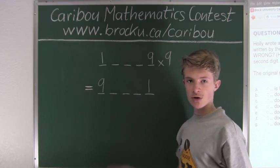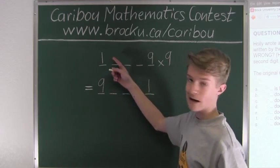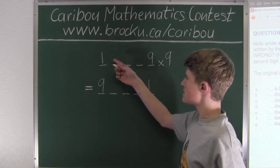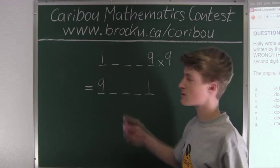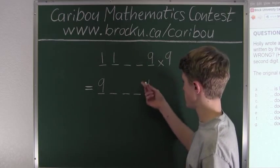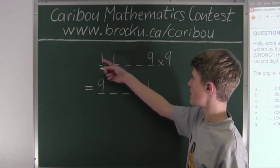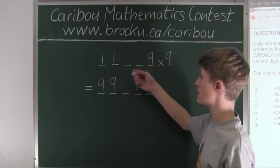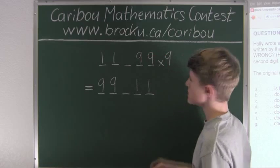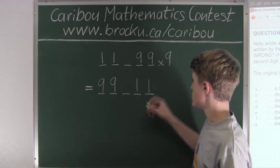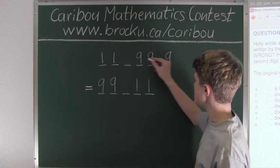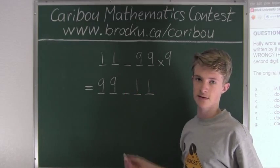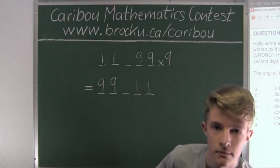Now let's look at the second digit of the original number. There cannot be any carryovers from 9 times this digit into the next column, because the leading digit must stay 1. So the second digit must be either 0 or 1. Let's try 1 first. Then 9 times 1 is 9, but then 9 times 9 is 81, putting down 1 with a carryover of 8. Then 9 times 9 is 81 plus 8 is 89, giving 9 — but we already have a 1 there. So this does not work. The second digit must be 0, not 1.